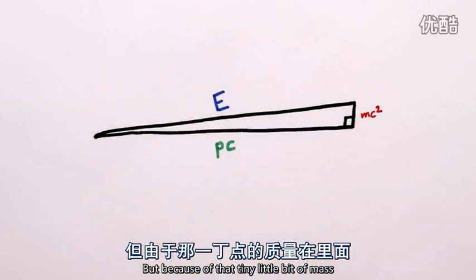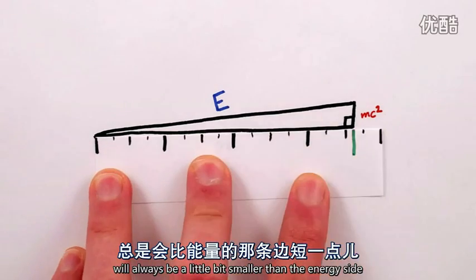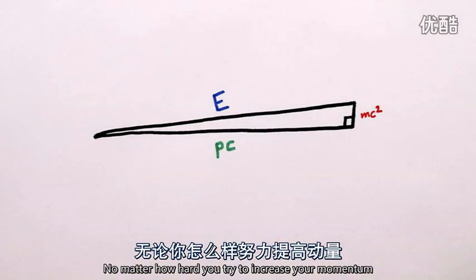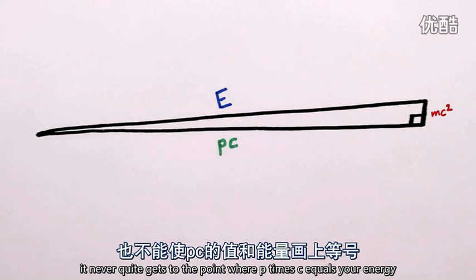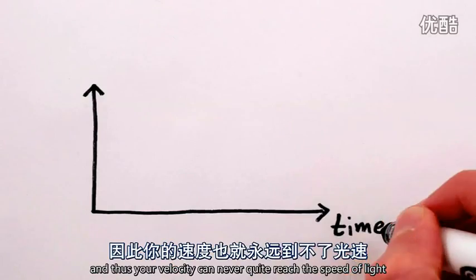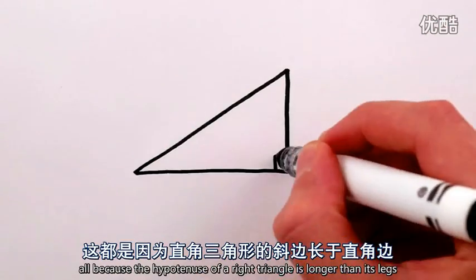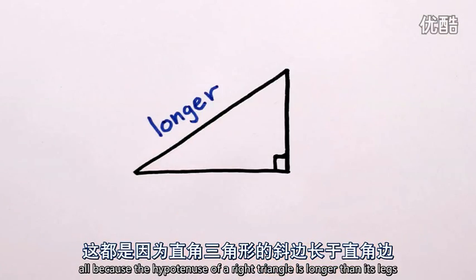But because of that tiny little bit of mass, the momentum side of the triangle will always be a little bit smaller than the energy side. No matter how hard you try to increase your momentum, it never quite gets to the point where pc equals your energy, and thus your velocity can never quite reach the speed of light, all because the hypotenuse of a right triangle is longer than its legs.